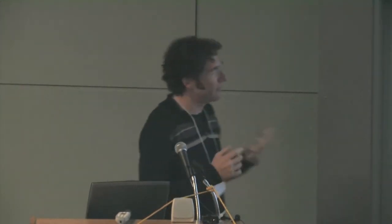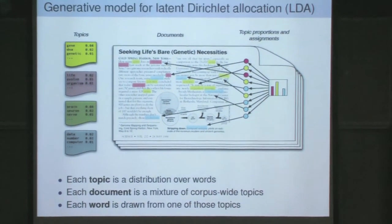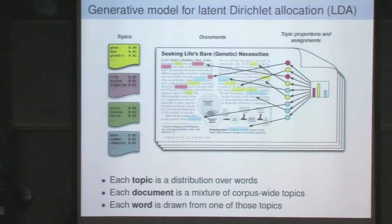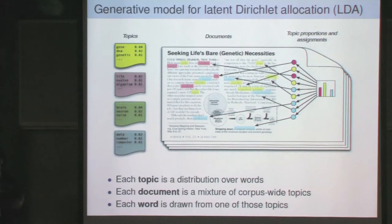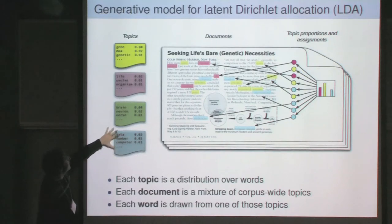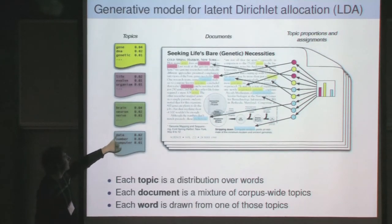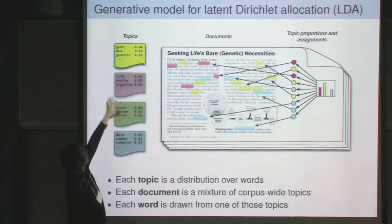We encode that intuition in a generative probabilistic model. The generative assumptions of LDA are imaginary—just a way to articulate the statistical independence assumptions we're making. Each topic is a distribution over terms in a vocabulary. With a vocabulary of 10,000 terms, topics live outside the collection, each being a distribution over those terms. We might have a distribution with words like data, number, and computer with high probability, and another with words like brain, neuron, and nerve. Let's say we have 100 of these.